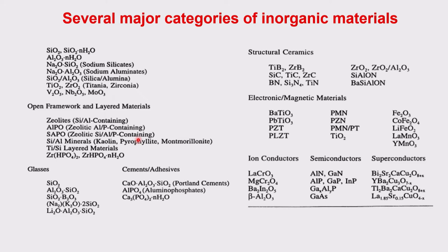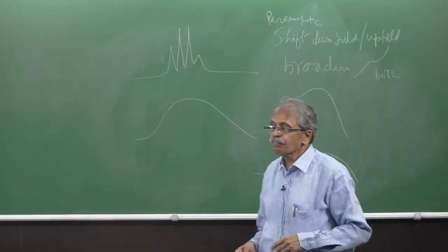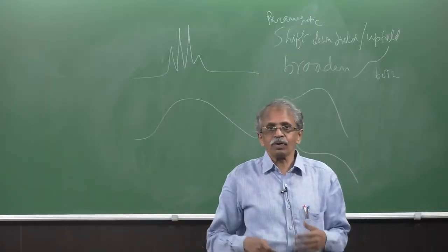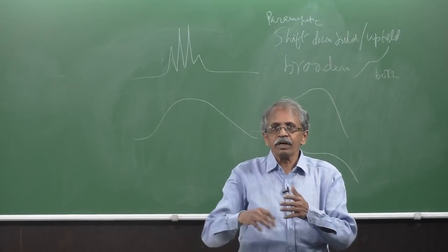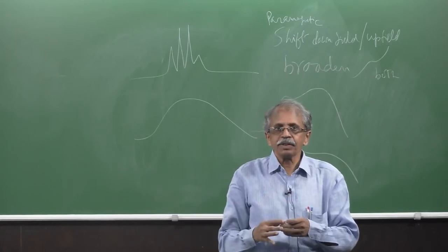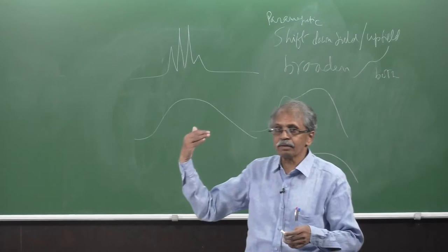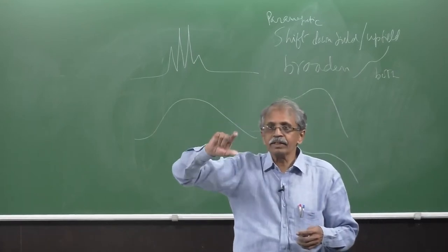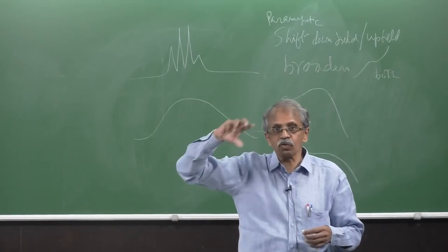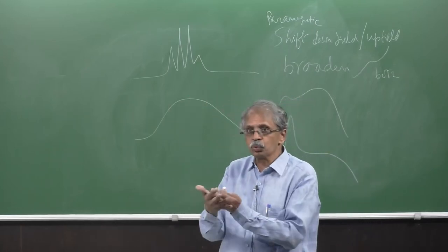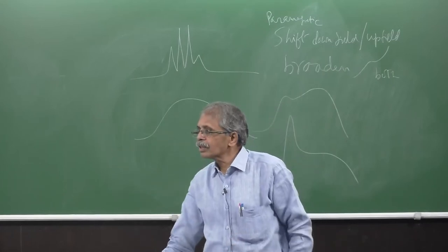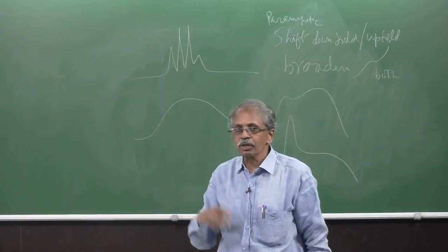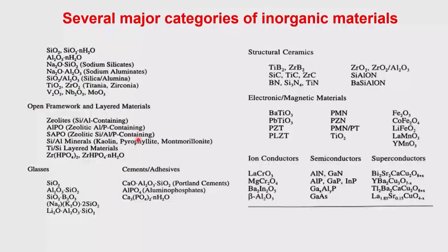What information do you want? You want information about the surroundings of a nucleus — which moieties are attached and their concentrations. Just as in proton NMR for organic systems you can count protons and determine ratios and concentrations, you want to do the same here. But that is not possible when spectra are broad and skewed.